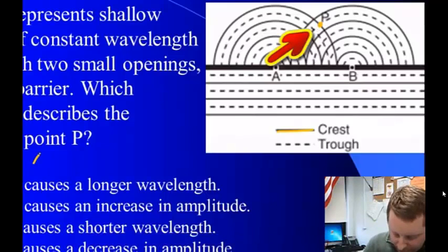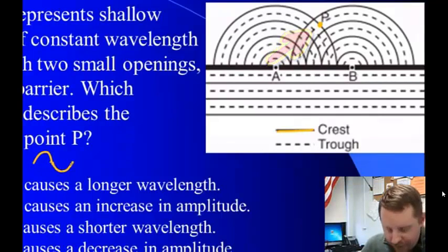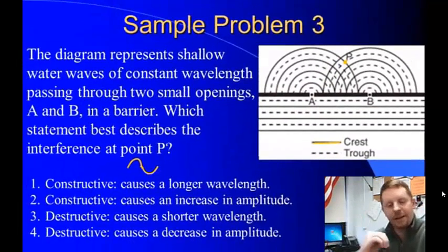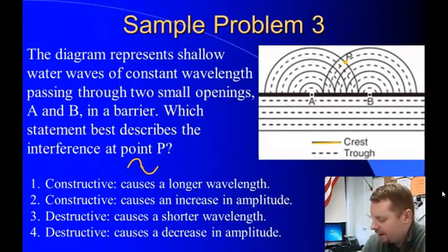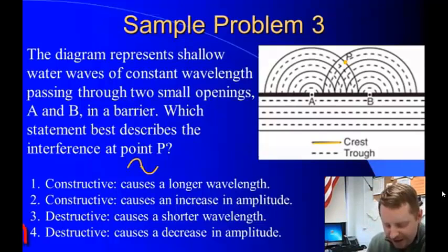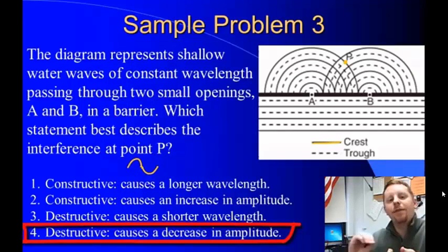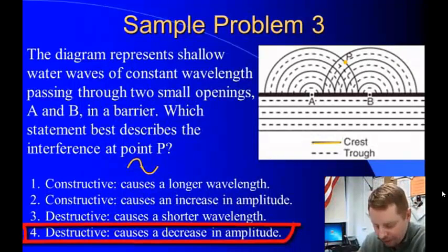I have a crest meeting a trough in the opposite direction. So when those overlap, we've got one up, one down. As they cross each other, they should completely negate. Destructive interference is going to cause a decrease in amplitude. So our correct answer here must be four. They have opposite displacements. So when they meet, those will negate each other and they will get a decrease in their overall amplitude.